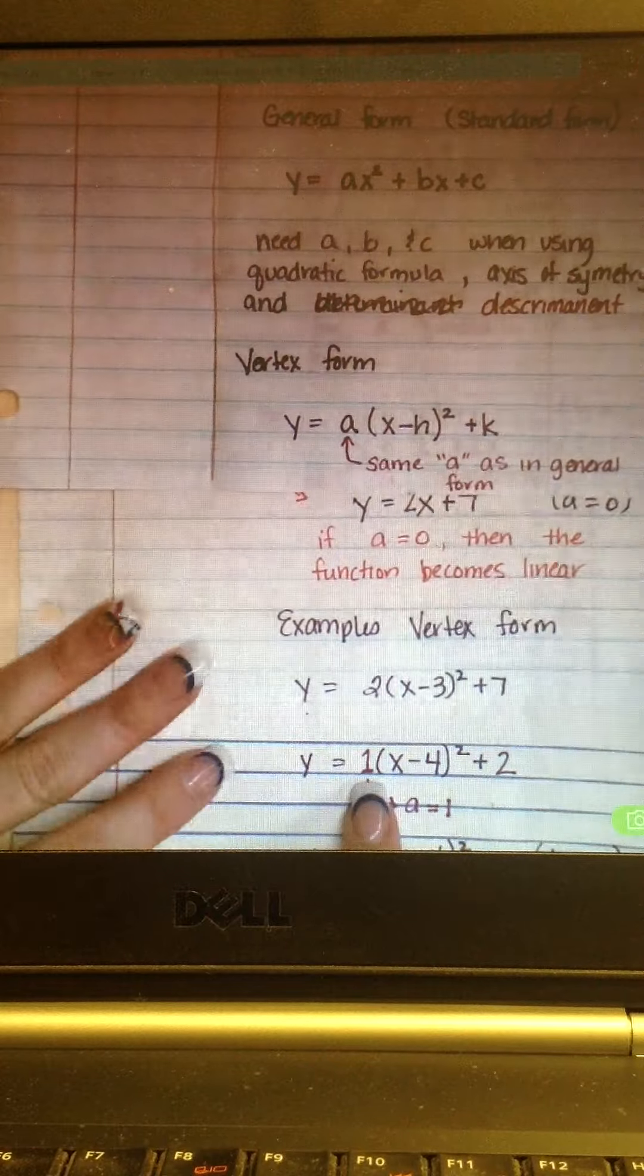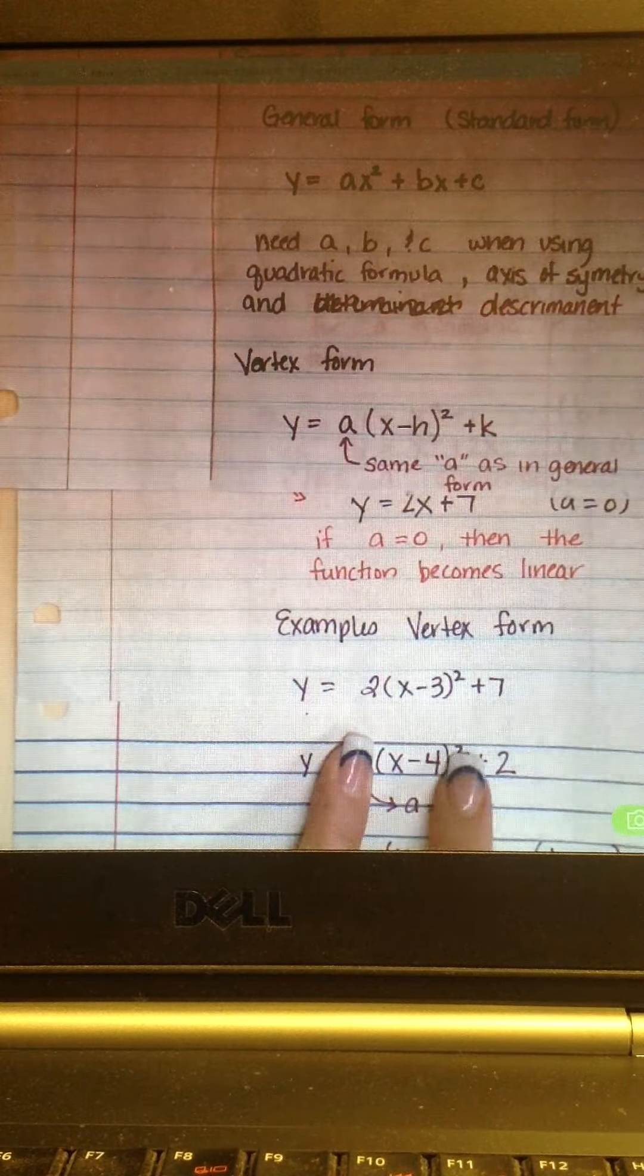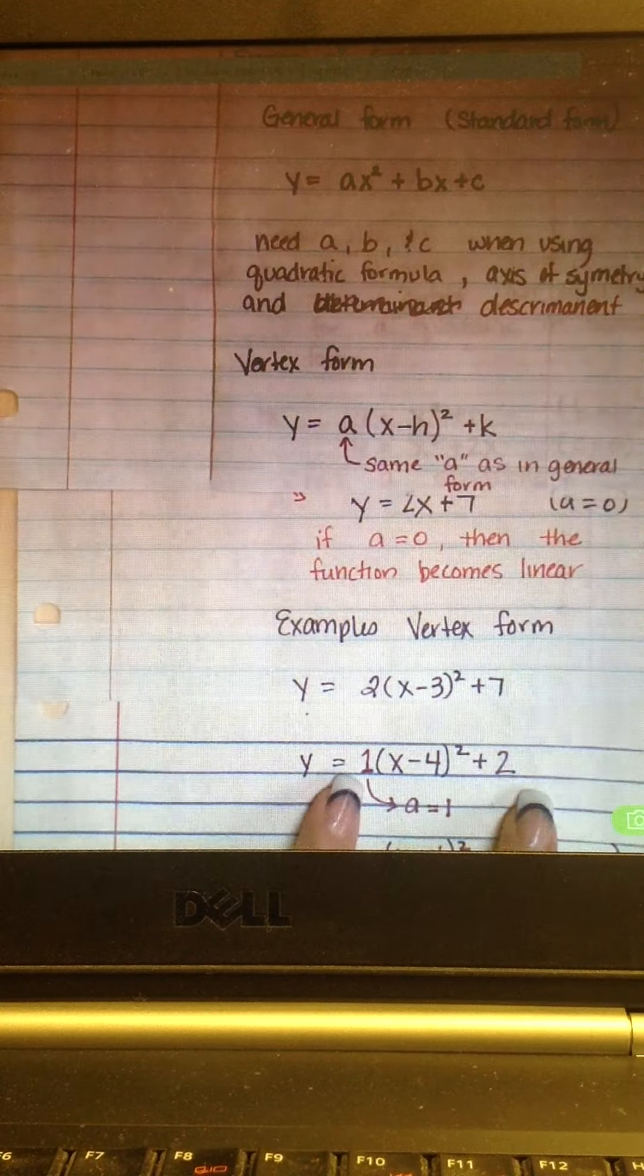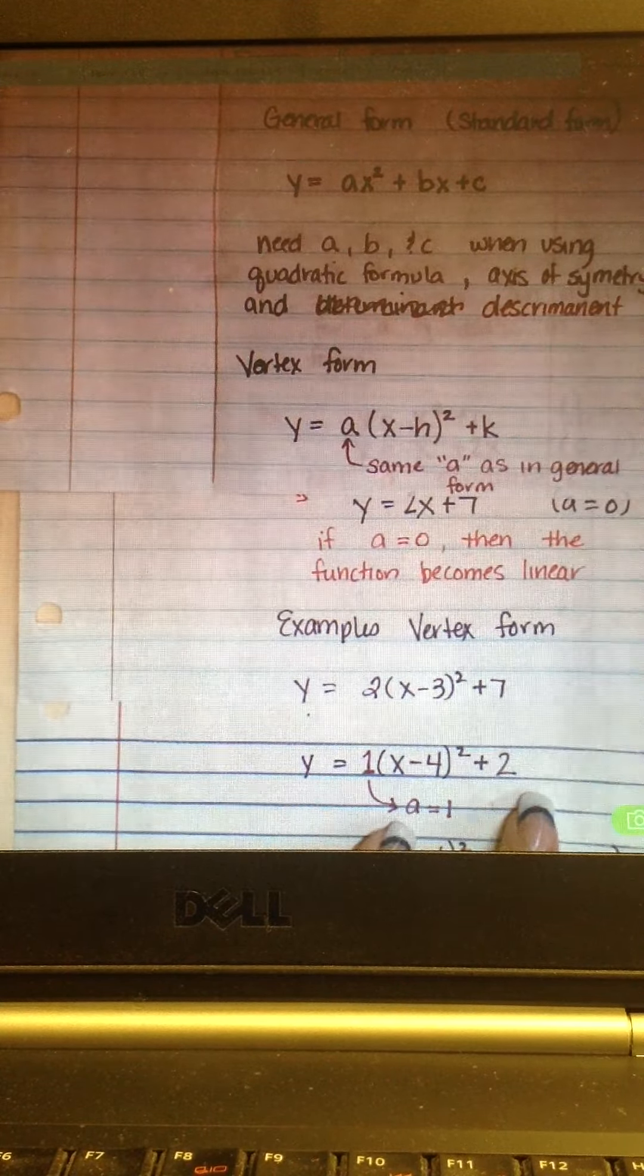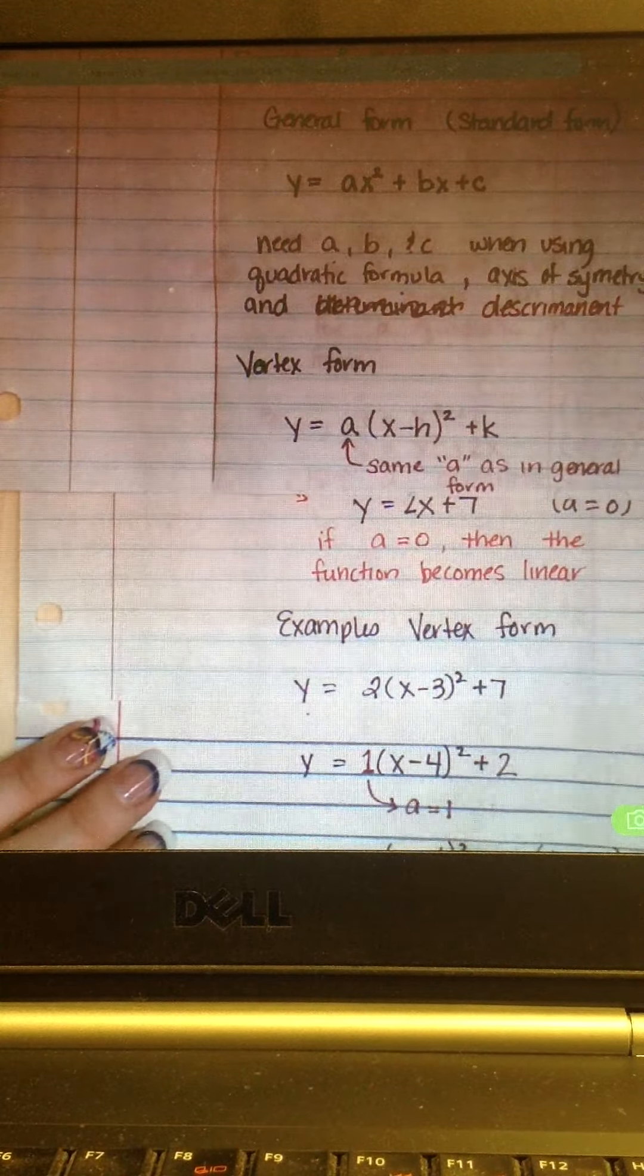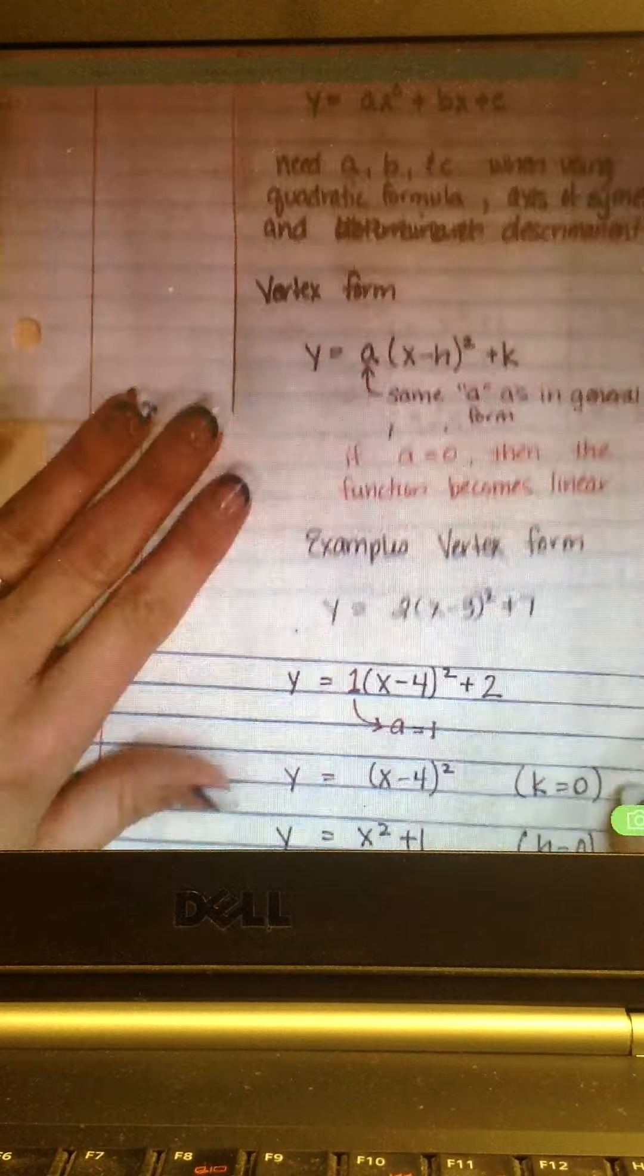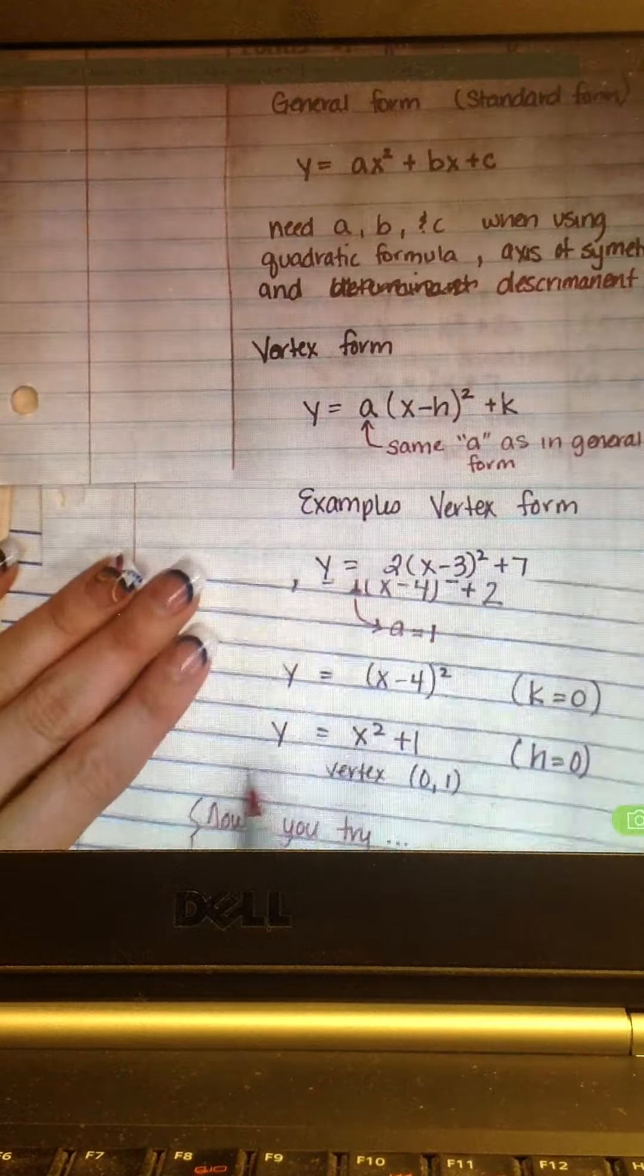Or, y equals, and if I didn't have anything there, x minus 4 squared plus 2. Well, if I don't have anything there, I can put that understood 1, which means A equals 1. So, this isn't an A equals 0 if it's not written there. It's a 1.